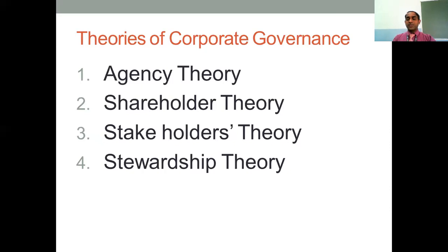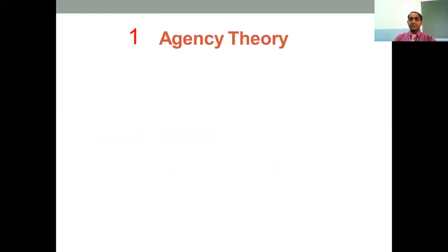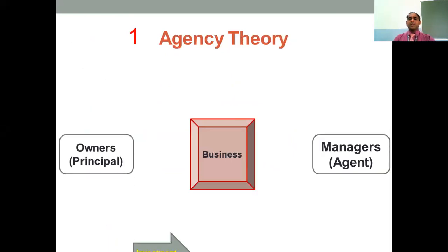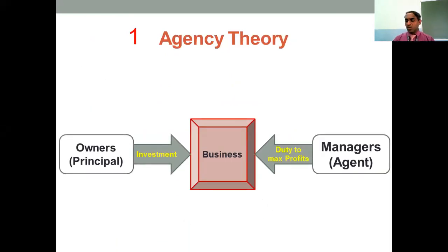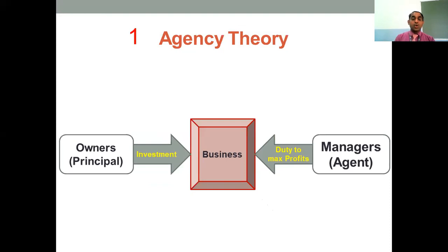From each theory we have to adopt some concepts for corporate governance. There will be two approaches we are going to study — one is rule-based approach and another is principle-based approach. First, to understand Agency Theory, we need to understand two words: 'agent' and 'principal.' In agency theory, the principle means 'important' — so here 'principal' means owners.